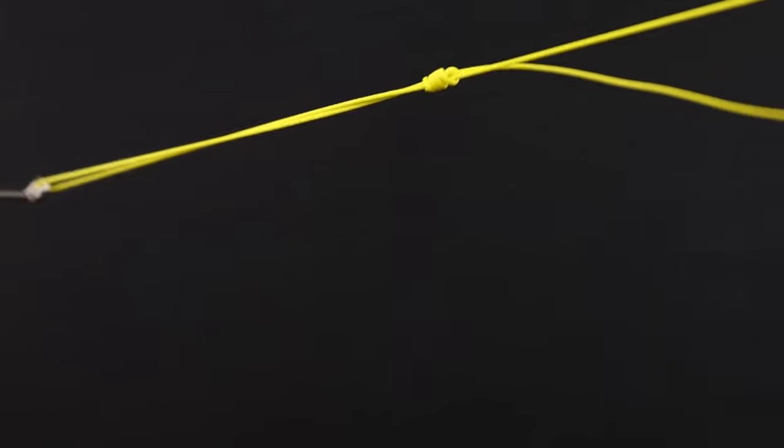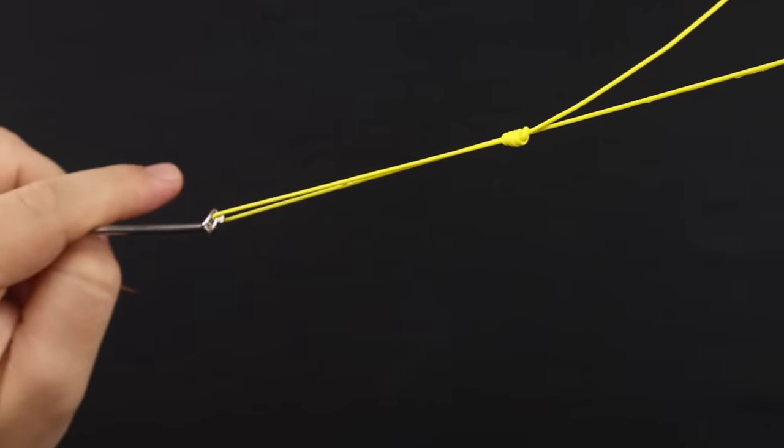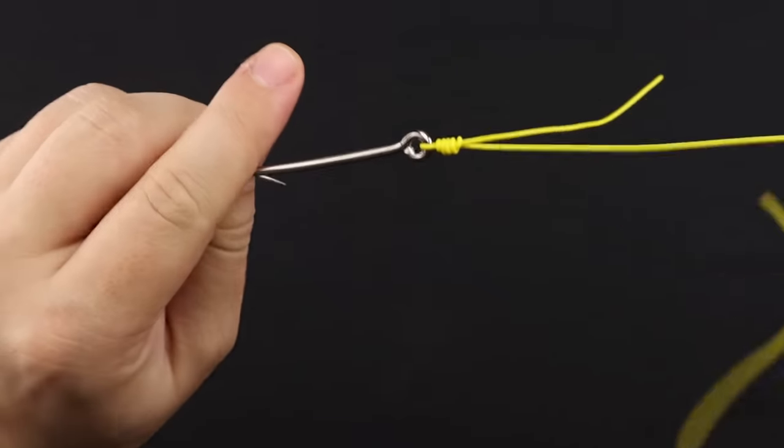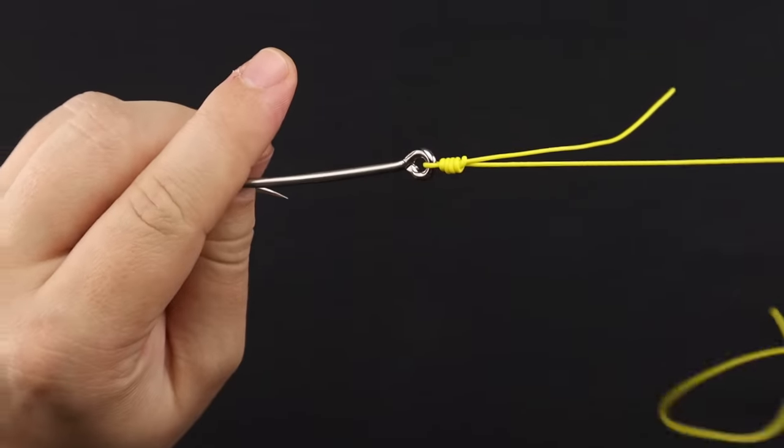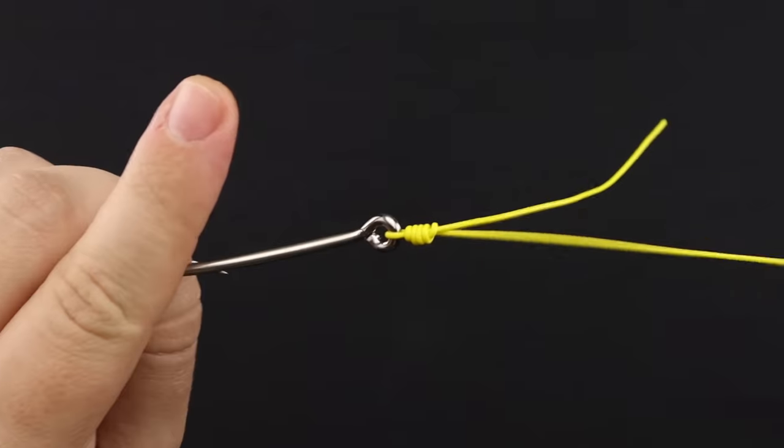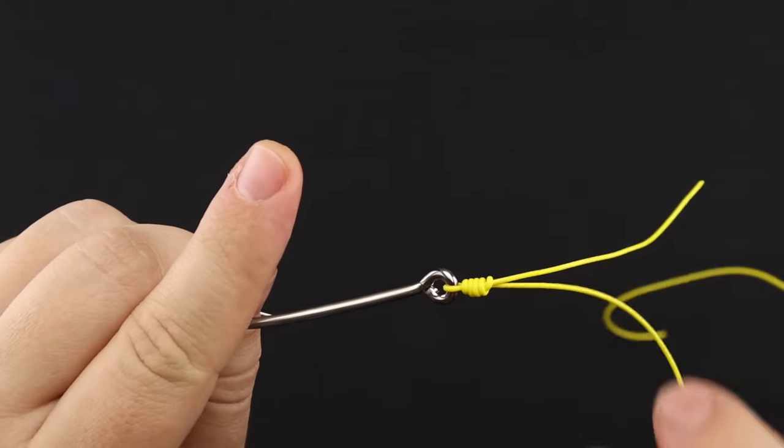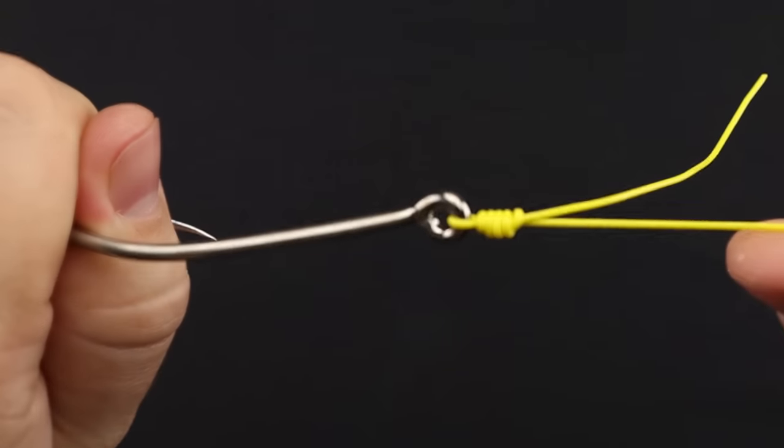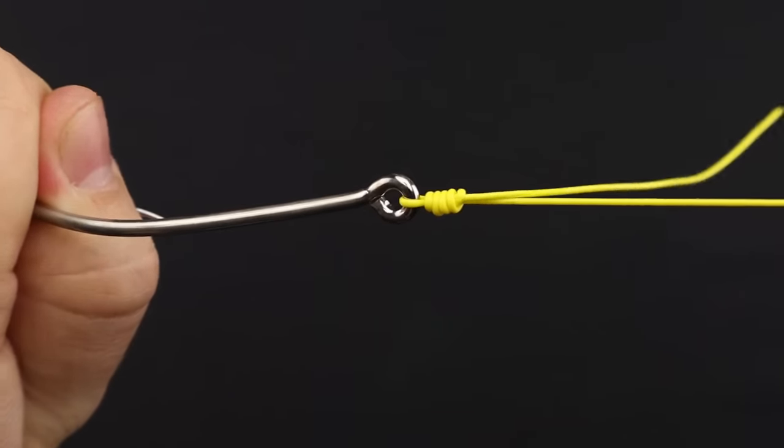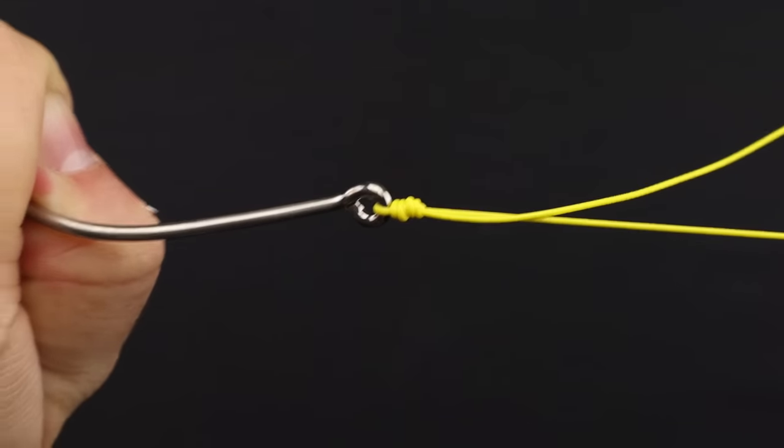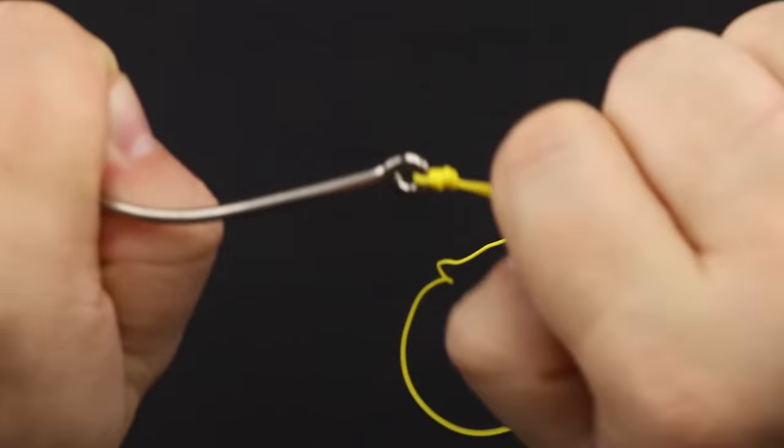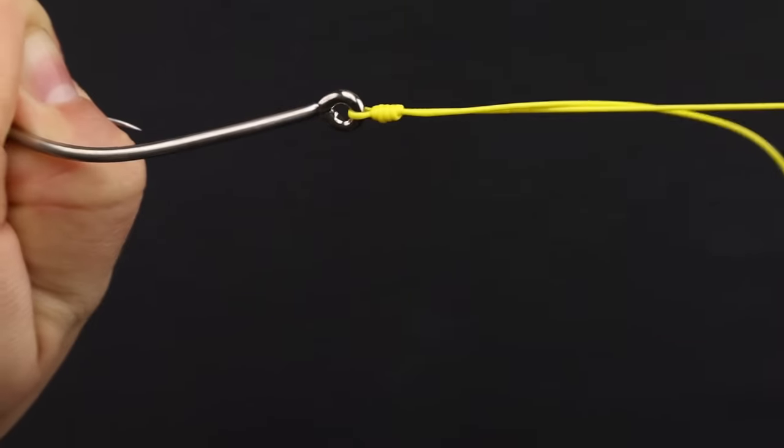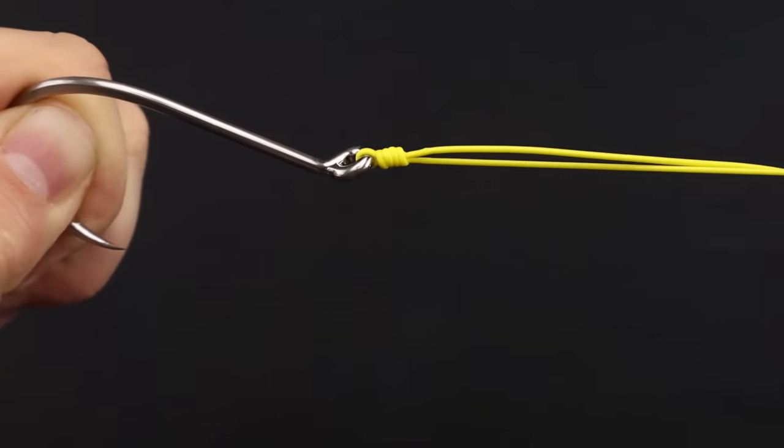And then what you can do is just pull on your main line. This knot will start working right to the eye of the hook and that's why it's important not to cinch that knot down at the beginning because if you do it will be really hard to tug on that and it could cause line breakage or line damage. But once you get it down to the hook shank, you can really pull hard on that tag end and main line. And that knot is nice and secure at this point.